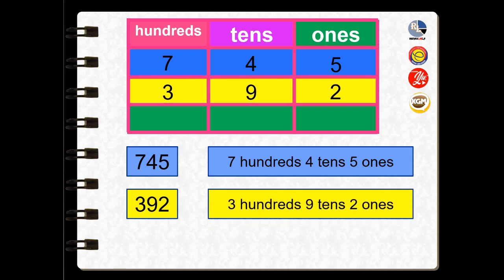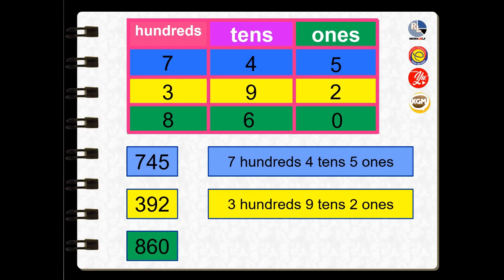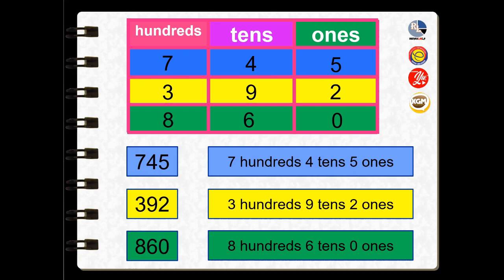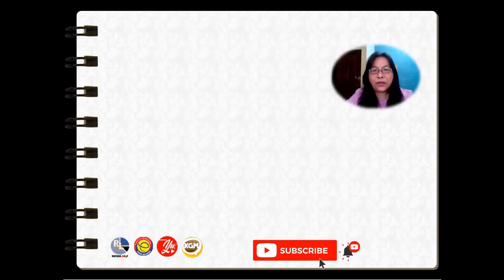The next number: digit zero — place value is ones. Digit six — place value is tens. Digit eight — place value is hundreds. Eight hundred and sixty, written in extended notation, is eight hundreds, six tens, zero ones.